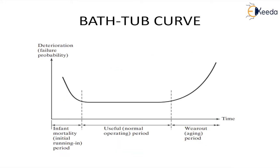We have already studied about the bathtub curve in earlier classes. It shows that if we plot a graph between the failure rate or the probability of failure of any product with time, we see that initially in the running period of the product the failure rates are very high, but during the useful normal operating period the failure rates are very constant and low.